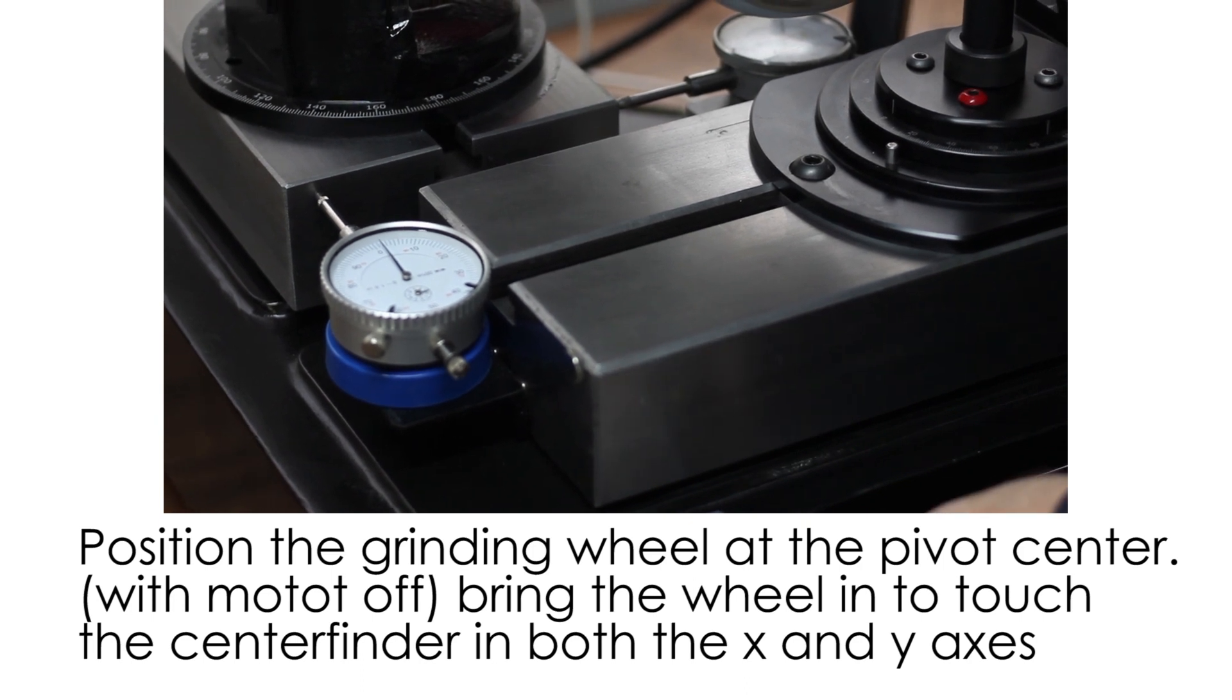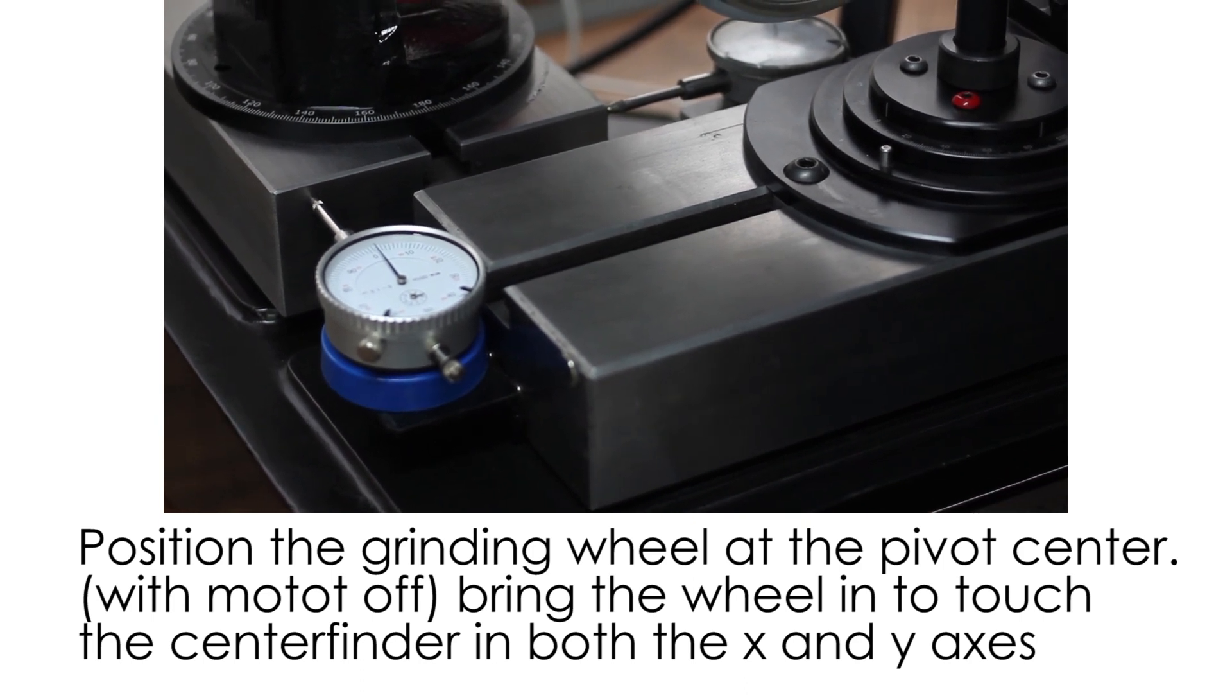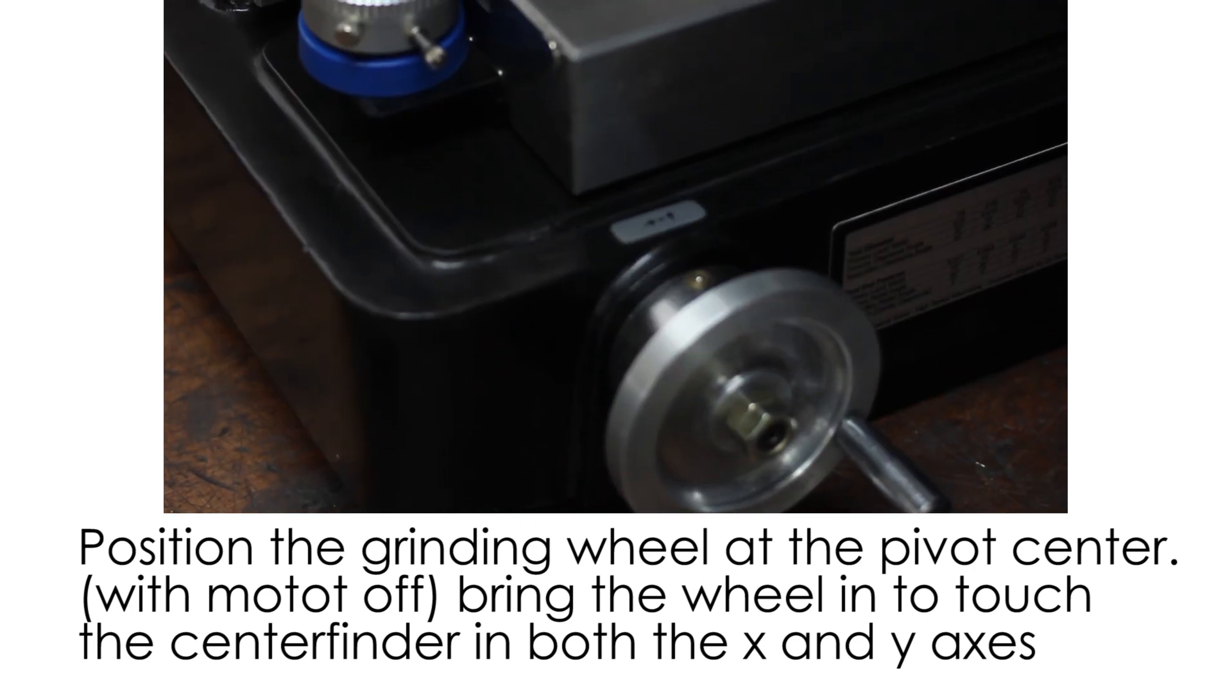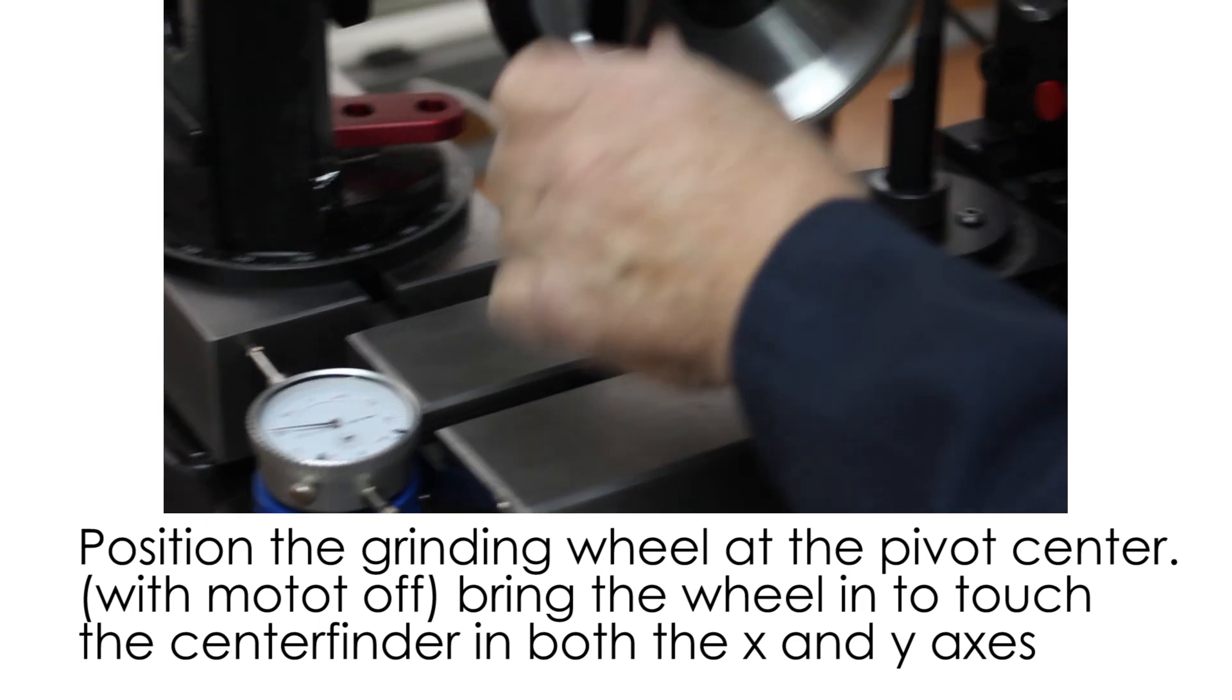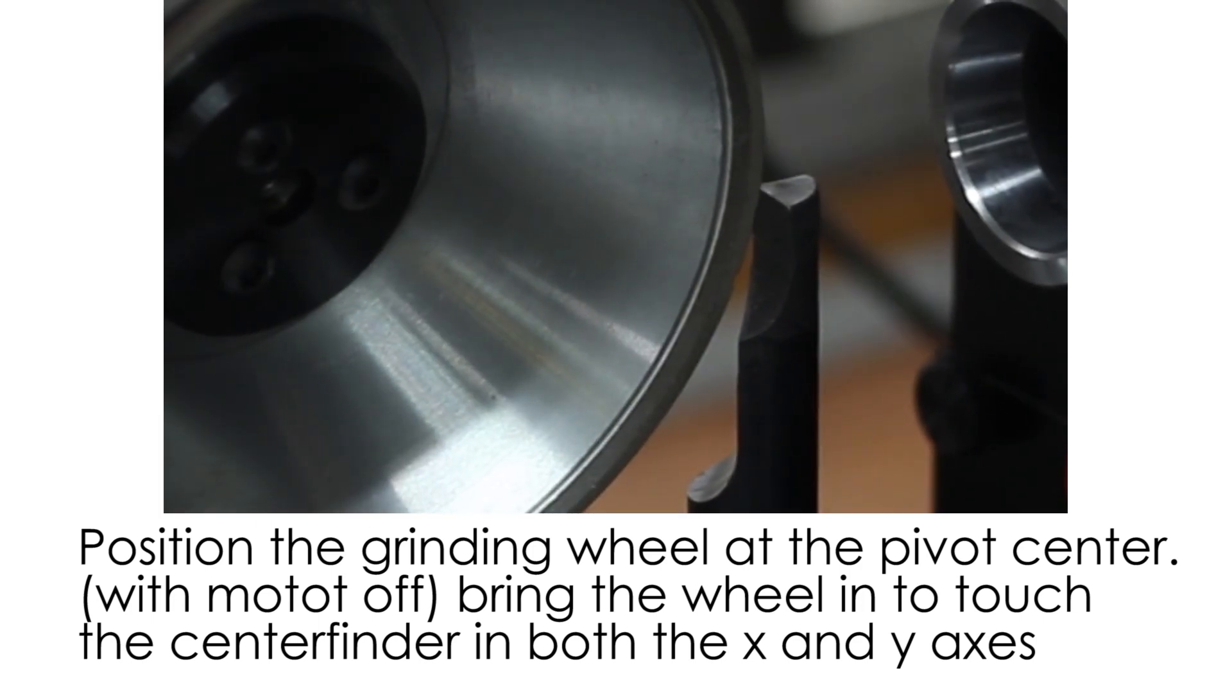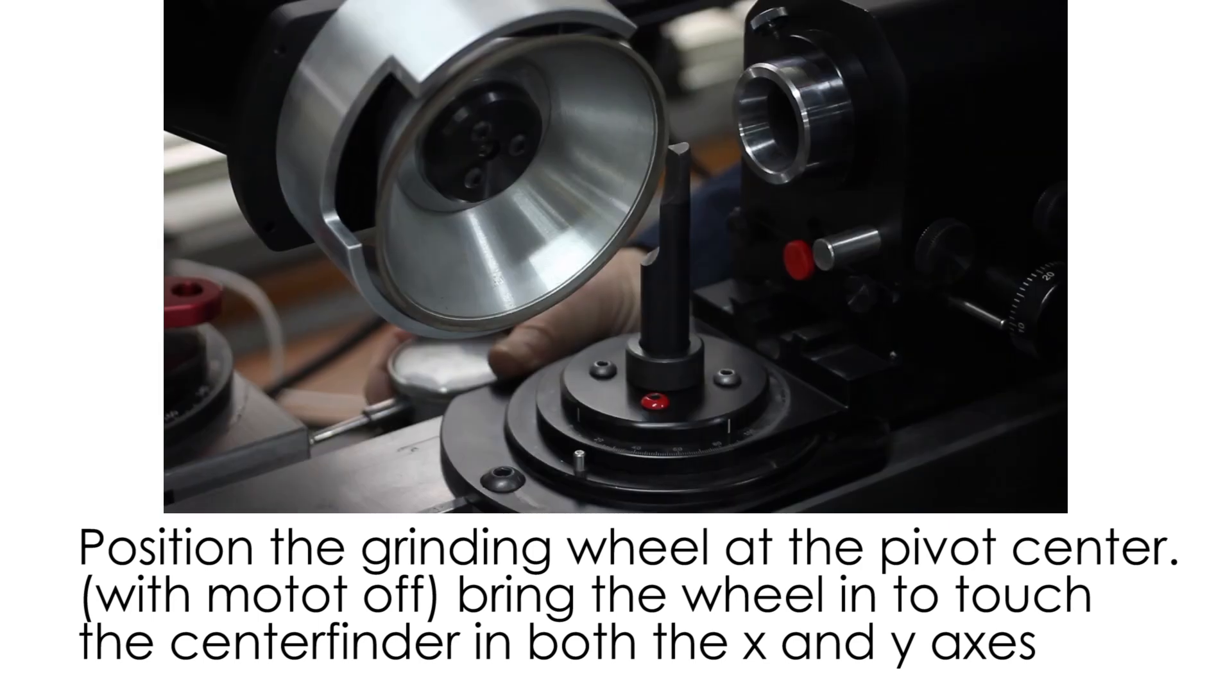Now that you've done that, we'll back up the x and bring the wheel in a little bit, and now we're going to bring this over till it touches. Then we will set the x-axis indicator to zero also.